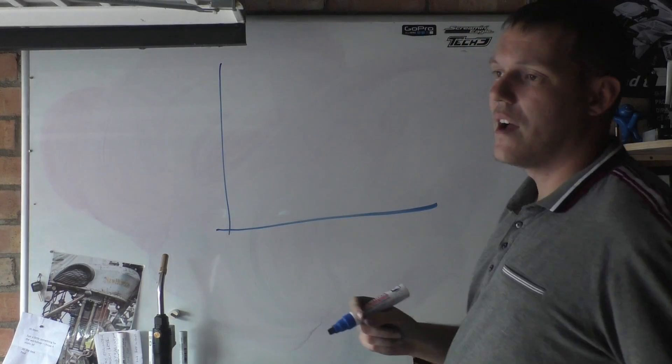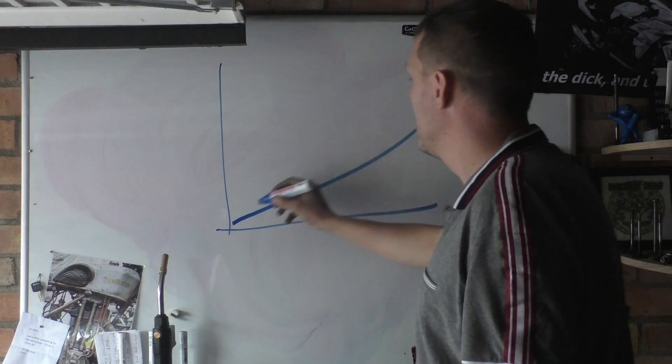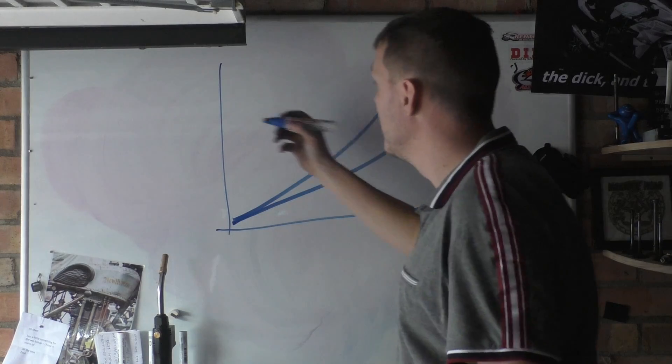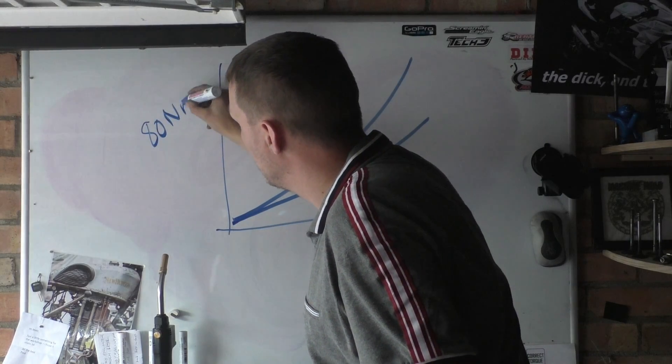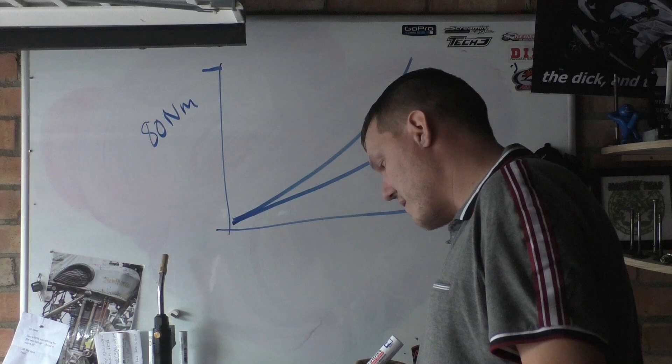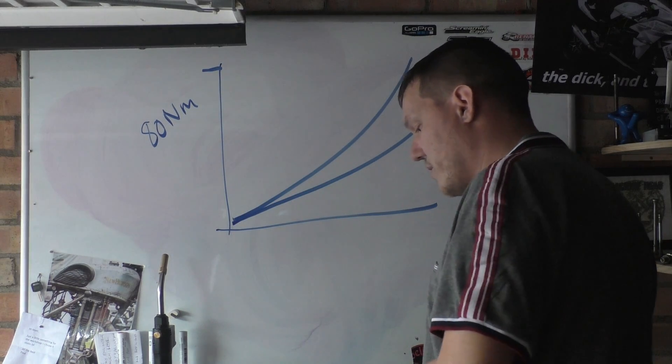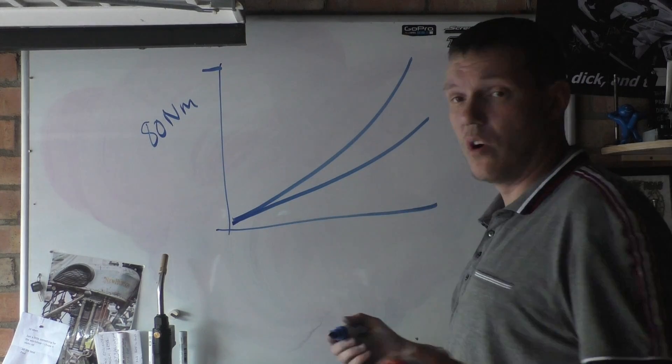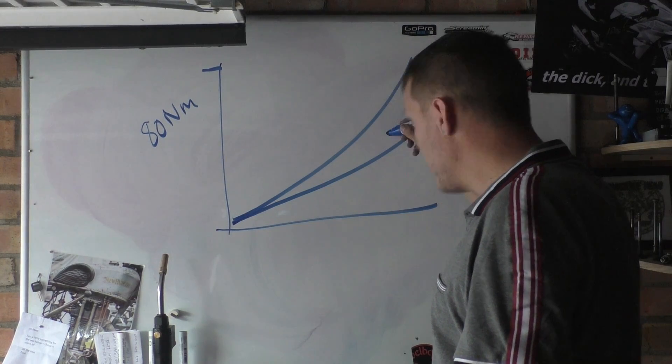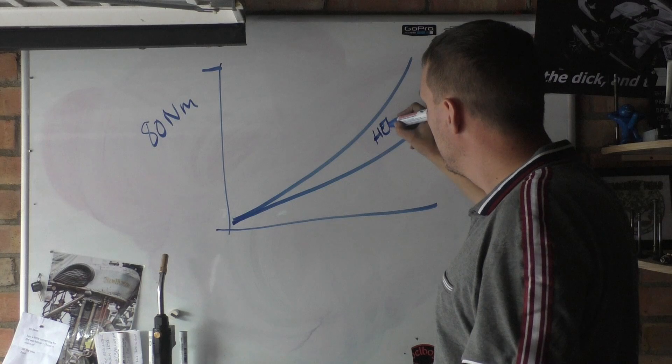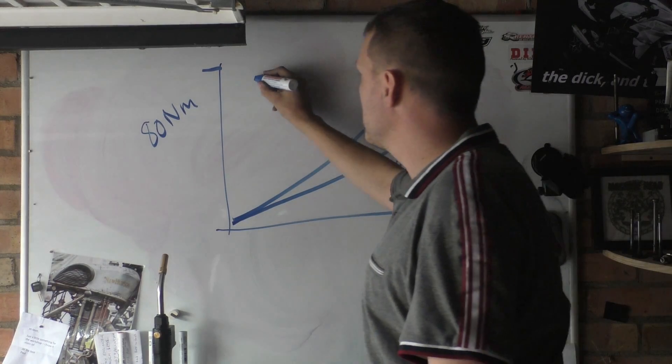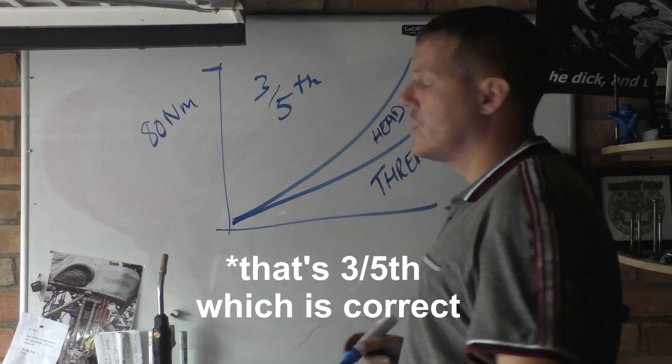And if you look at the torque sequence for a fastener, I've got this written down just because it's an actual graph from a reel. This is 80 newton metres, up to 80 newton metres. Input torque. So you basically have to apply so much torque to overcome the... That's the head, and that's the thread. And it's about two-fifths. There's a relationship to each other.